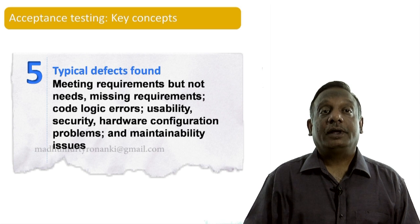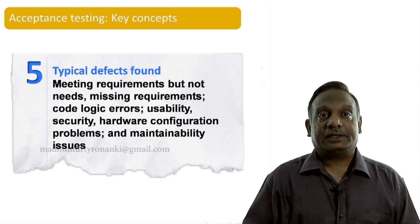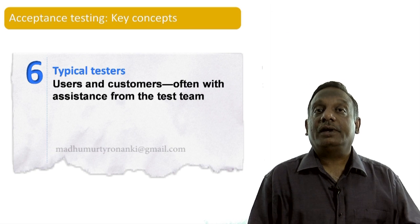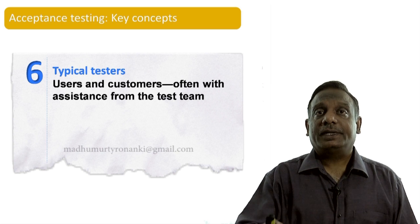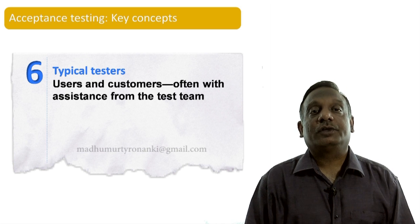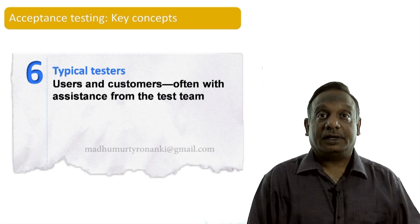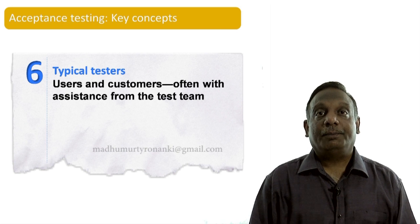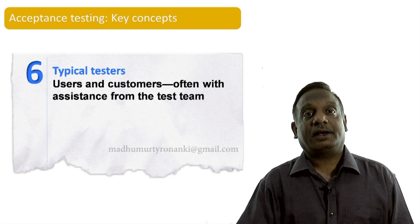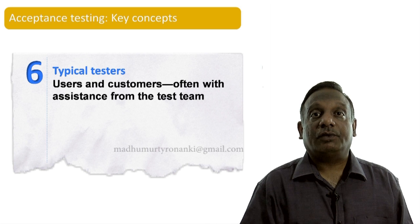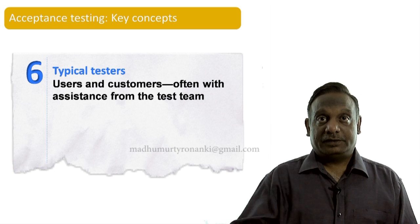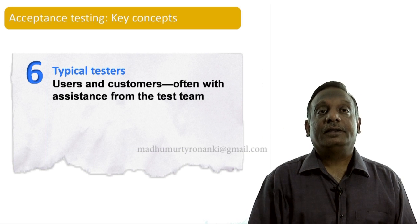The typical testers who conduct acceptance testing are the users and customers. The people at the customer's site who gave the end-user requirements perform user acceptance testing. Additionally, before putting it into production, system administration and operations people will conduct another type called operational acceptance testing. So either functional teams or system operations people will be conducting these tests.